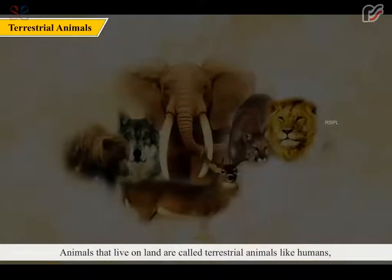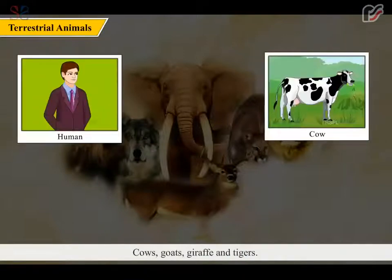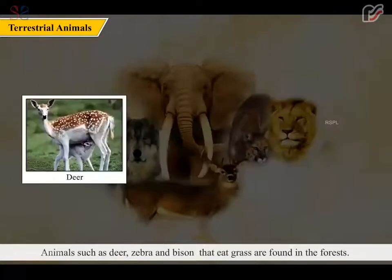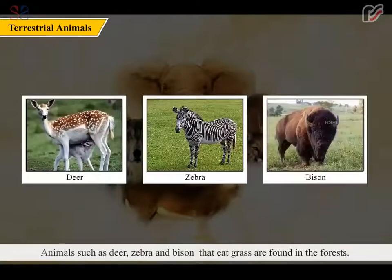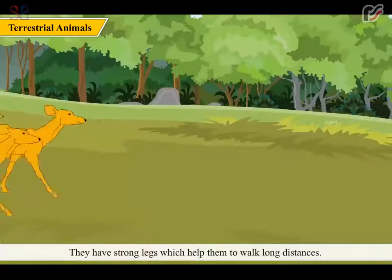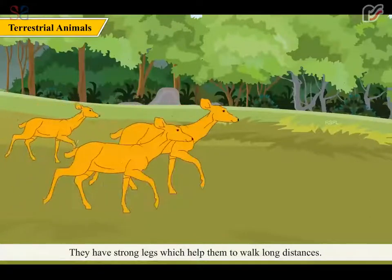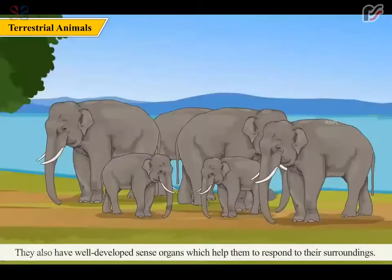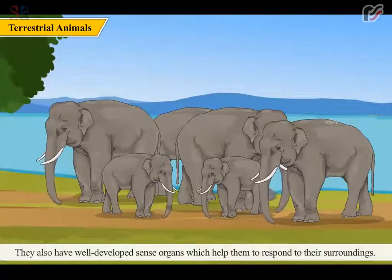Animals that live on land are called terrestrial animals, like humans, cows, goats, giraffes and tigers. Animals such as deer, zebra and bison eat grass or roam in the forests. They have strong legs which help them to walk long distances. They can also run fast to escape from their enemies. They also have well-developed sense organs which help them to respond to their surroundings.